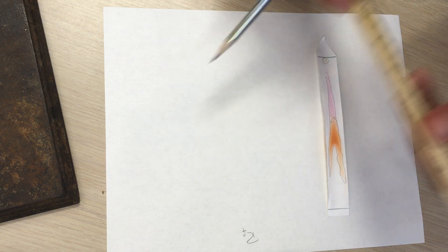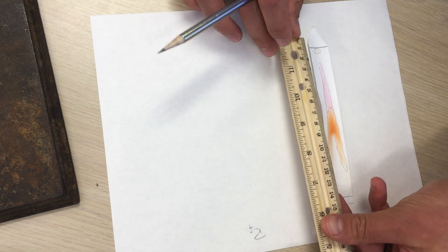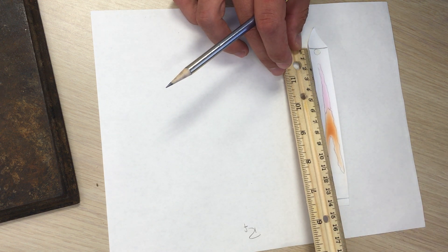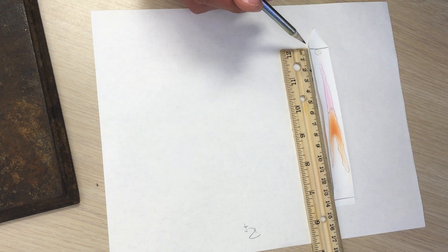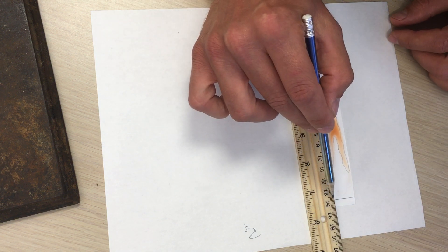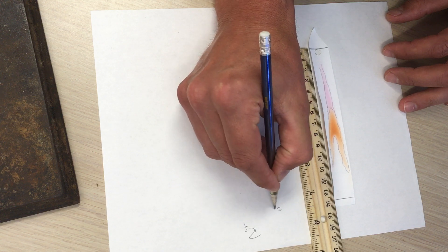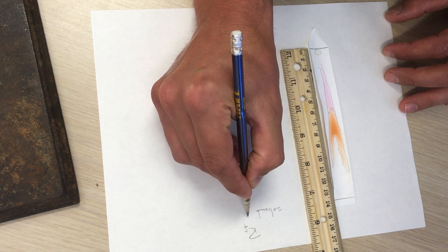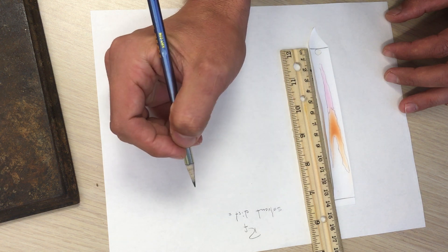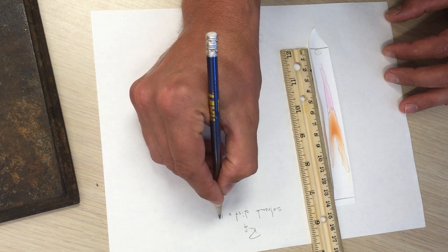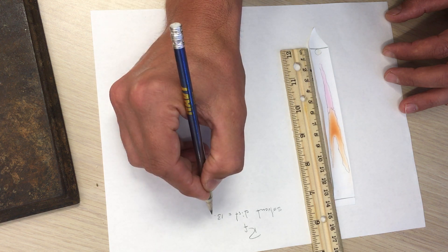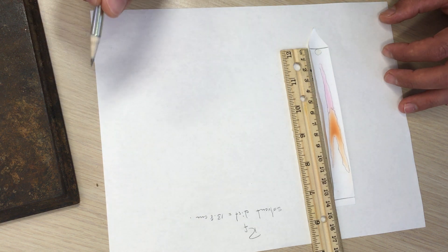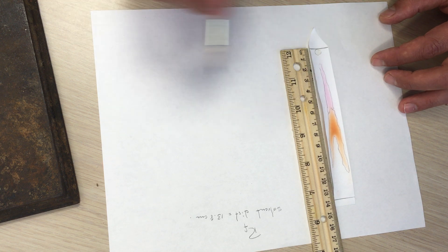So we measure from the line where the dye started from to where the dye ended. And so the solvent, not the dye but the solvent, the solvent distance is in this case 13.8 centimeters. And then we look at the distance that each component color traveled.